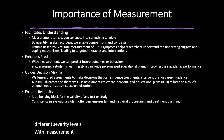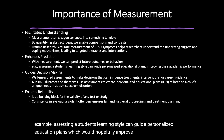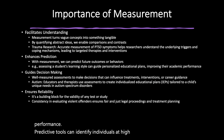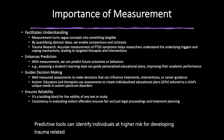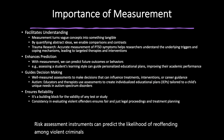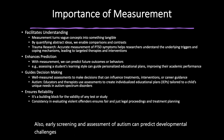With measurement, we can predict future outcomes or behaviors. For example, assessing a student's learning style can guide personalized education plans, improving academic performance. Predictive tools can identify individuals at higher risk for developing trauma-related disorders, allowing for early intervention. Risk assessment instruments can predict the likelihood of re-offending among violent criminals, guiding sentencing and parole decisions. Early screening and assessment of autism can predict developmental challenges, enabling early therapeutic support.